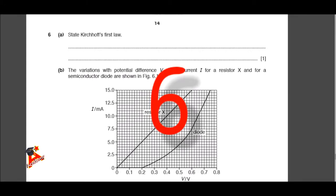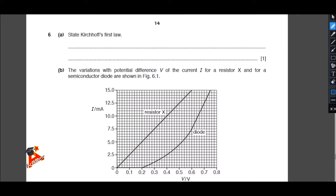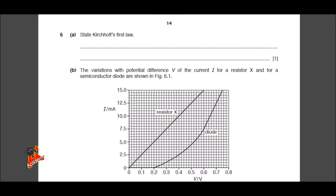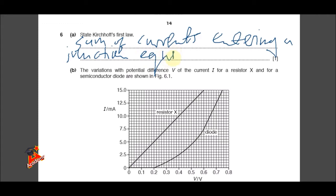Kirchhoff's first law, which is otherwise known as Kirchhoff's current law, states that the sum of currents entering a junction is equal to the sum of currents leaving the junction.